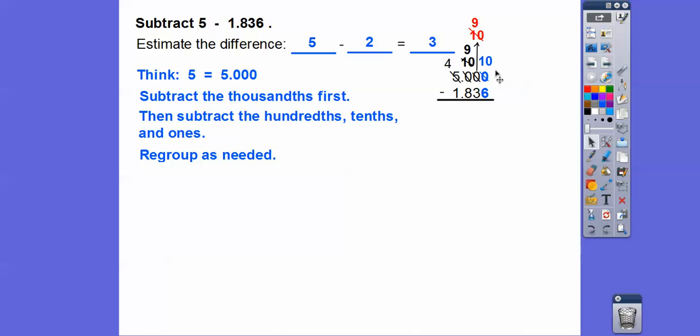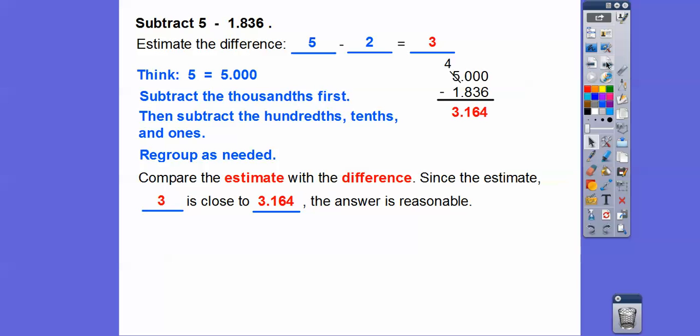Now we can borrow from this 10, and we're going to make that a 9, and it makes the next 0 10. So we're going to borrow from this 10 and make that a 9. And then now we can subtract. So 10 minus 6 is 4. Now we're going to subtract the hundredths spot. So 9 minus 3 is 6. Now we can subtract the tenths spots. So 9 minus 8 is 1. And then finally we can subtract that ones spot. The 4 minus 1 is 3.